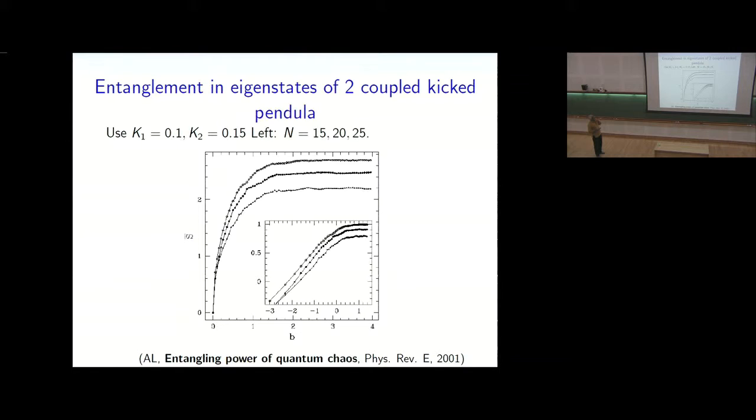But in this case, the pendula are not, they're actually kick pendula themselves. So the individual pendula can be chaotic. So in this case, they're not very chaotic to begin with. It's 0.1, 0.15. In Shashi's example, they were like 9 and 10. So they were very chaotic. So these are not very chaotic. And this N, by the way, this is the number of states in each of these kick rotors. So they are finite dimensional Hilbert spaces. And it should be mentioned that this N is a scale Planck constant. So in all of these things, N is 1 over h. So the larger the N is, it's like going towards the classical limit.